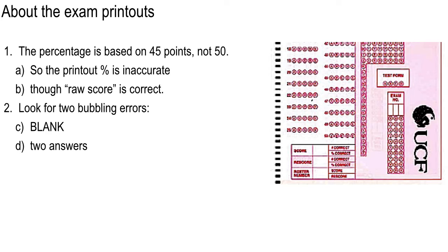I've seen this on many multiple-choice tests. Sometimes when grading by hand I'll see the correct answer circled and erased, and then the wrong answer circled. That's why they say your first answer is usually correct, and if you replace it, it's usually with a wrong answer. There is an exception — if you clearly remember the correct answer coming to you like a bolt.